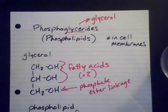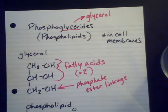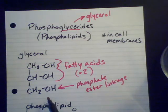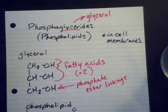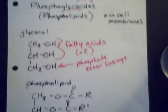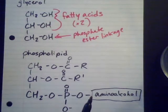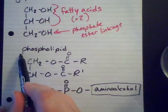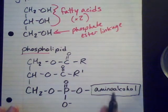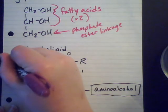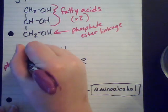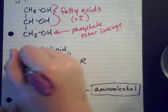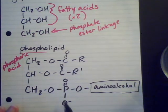This phosphate ester linkage is going to be linked to the glycerol on one side. And on the other side of it is going to be an amino alcohol. So when you put this all together, it's going to look something like this - here's our phospholipid. The 'phospho' refers to the phosphoric acid that we are reacting with, or the phosphate group that ends up right here.